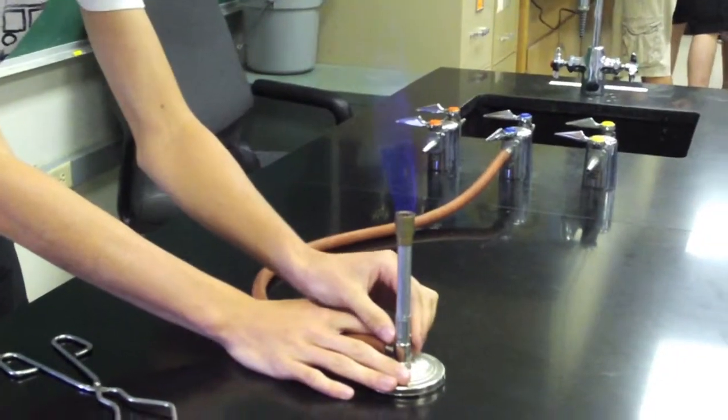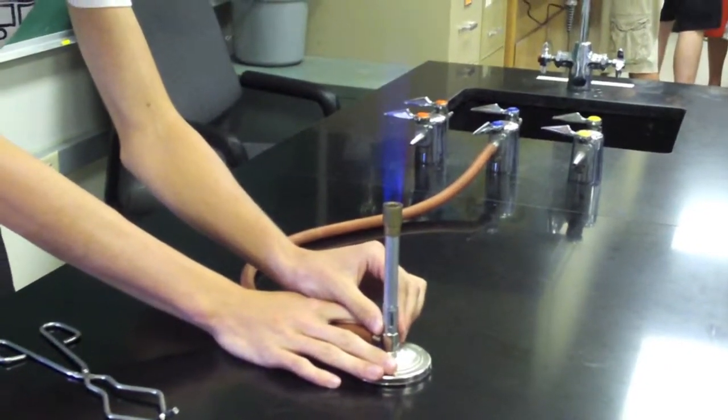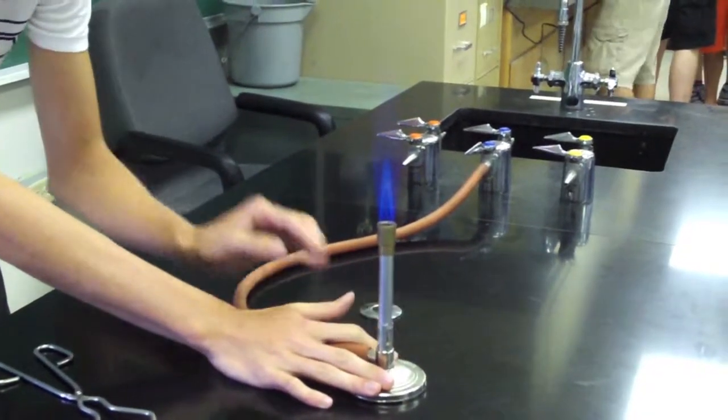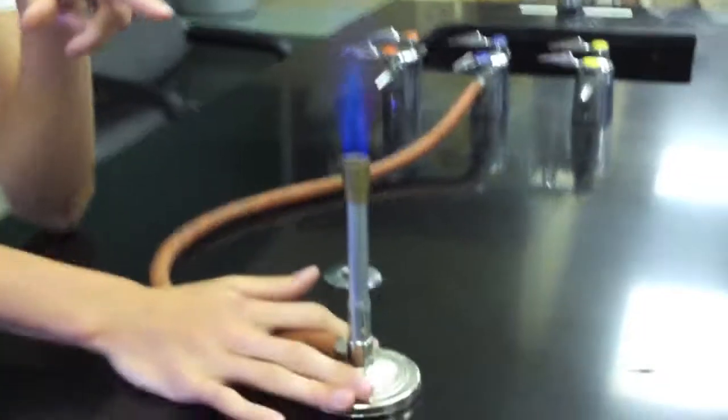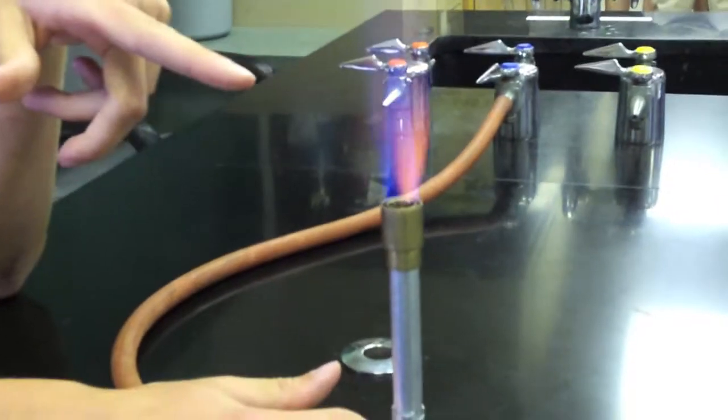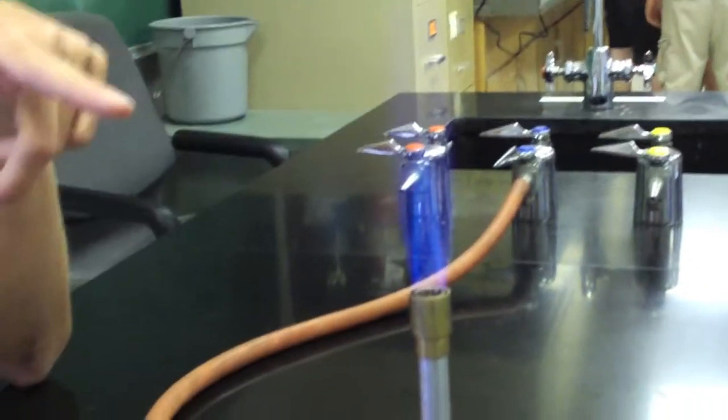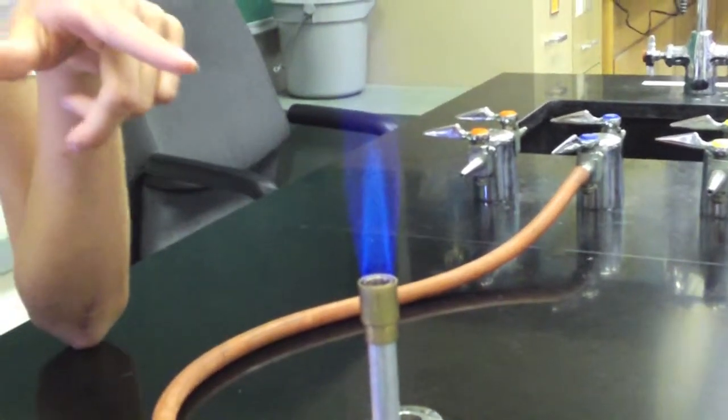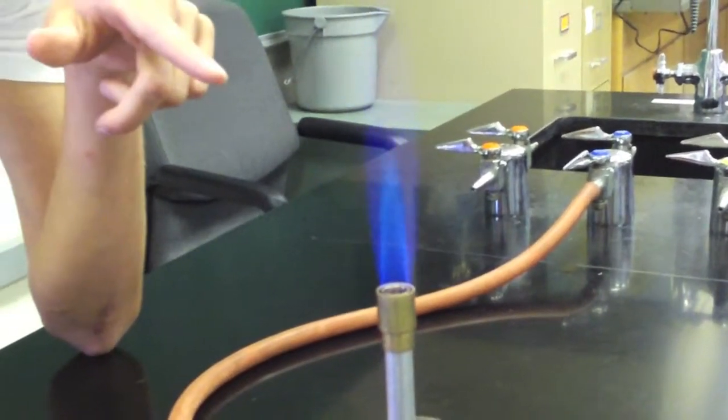Right now, it's a pretty weak flame, but when I start opening the air valves, as more oxygen goes in, you develop this light blue inner cone. This inner cone is going to be the hottest part of the Bunsen burner. So when you're heating something like a crucible, you want to place the bottom of the crucible right above the light blue cone.